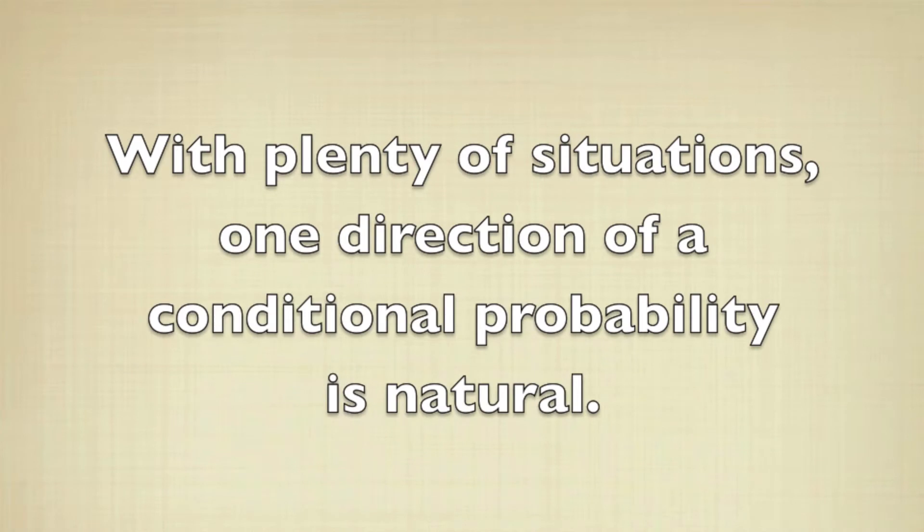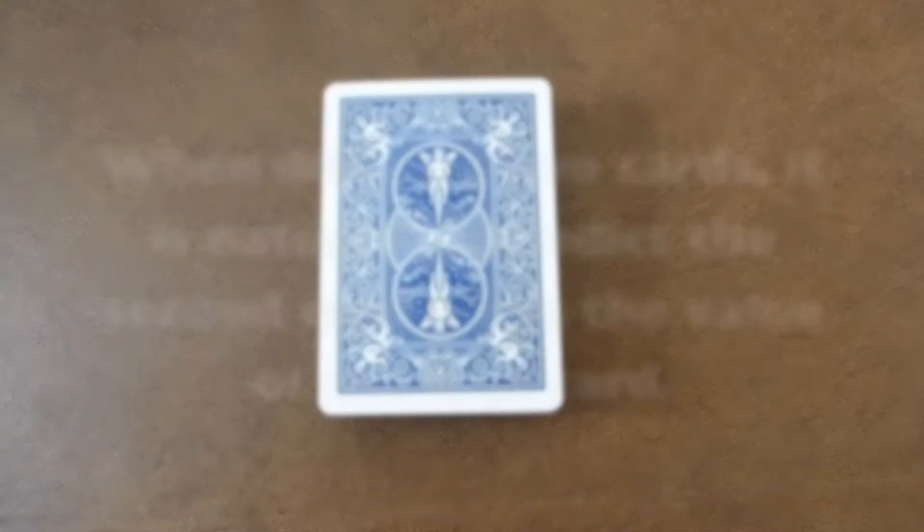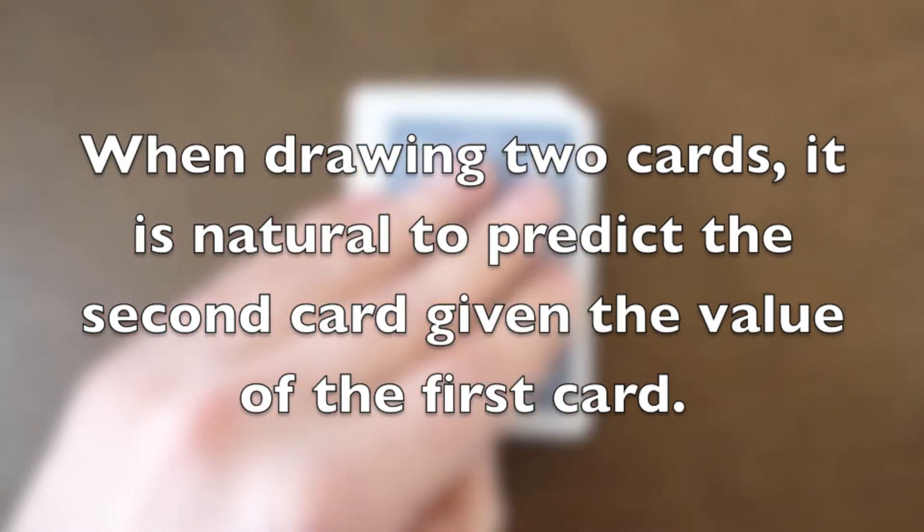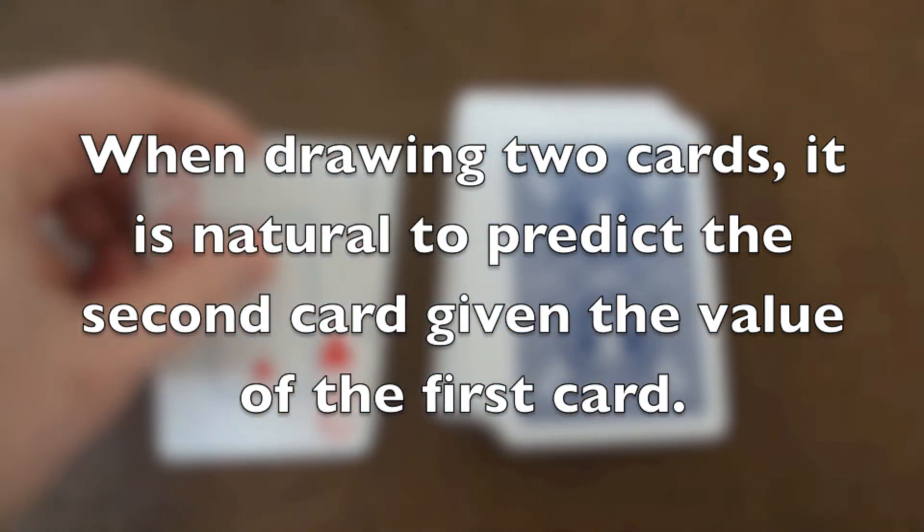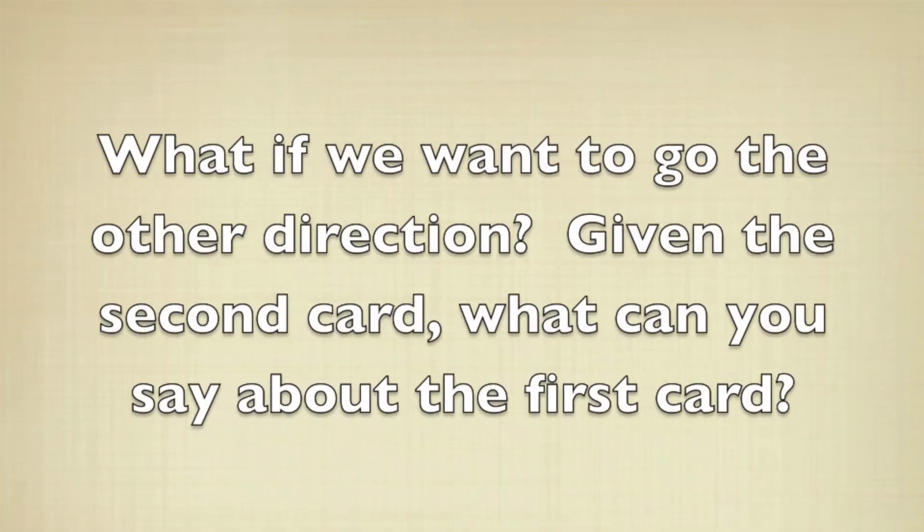In a lot of practical situations, conditional probability in one direction is perfectly natural. When drawing two cards, it's very natural to predict the second card given the value of the first card. But what if we want to do the other direction? What if we want to predict what the first card was given information about the second card? That's where Bayes Theorem comes in.